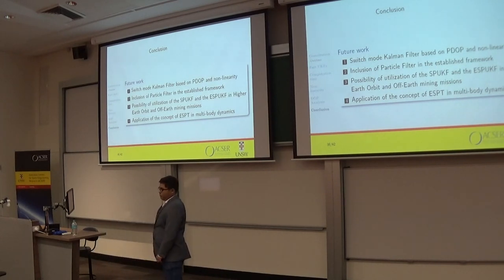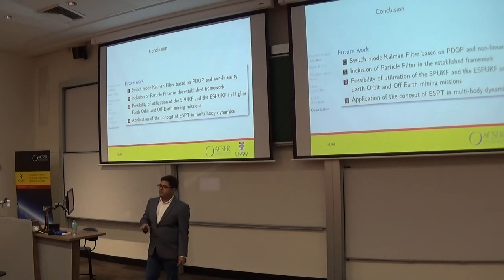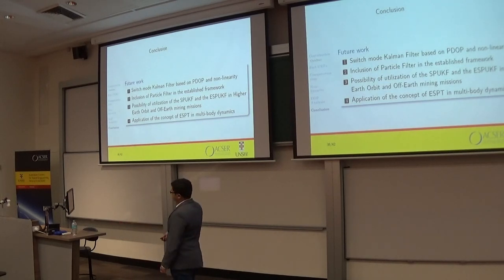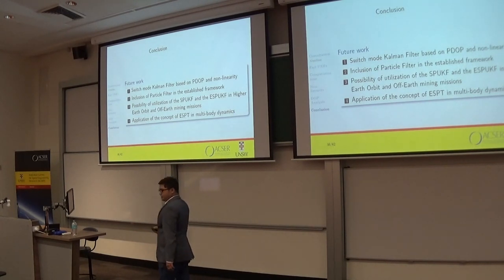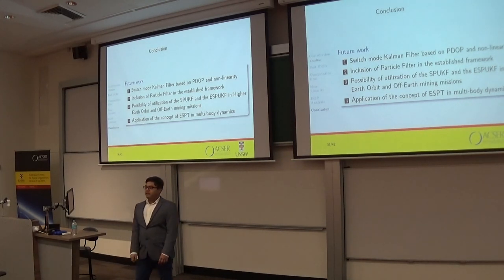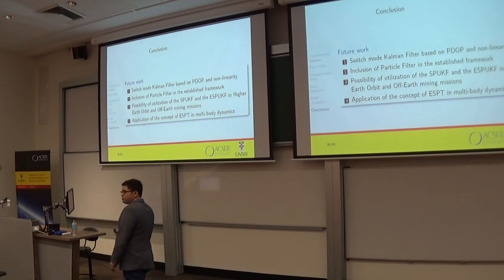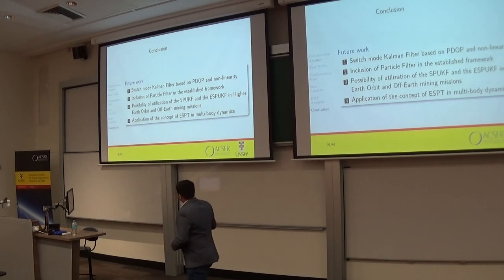Future work: filter performance for GNSS applications depends on two factors — nonlinearity and DOP. We can use these two properties to switch between different filters in real time for optimal resource management, and we will be working on this switch-mode Kalman filter framework soon. Can we include the particle filter in this framework? Yes — we can improve particle filter efficiency using the extrapolated single propagation technique. And can we use SPUKF and ESPUKF for high Earth orbit navigation? In highly eccentric high Earth orbits, the system is highly nonlinear, so we want to examine filter performance there.